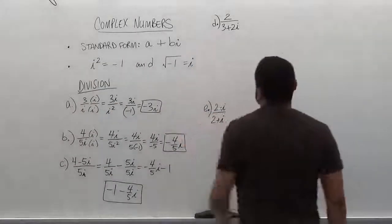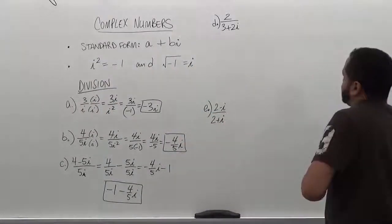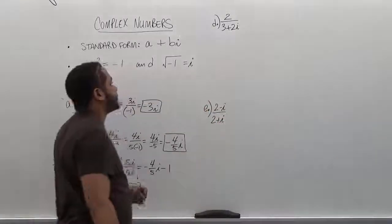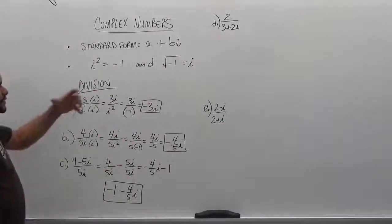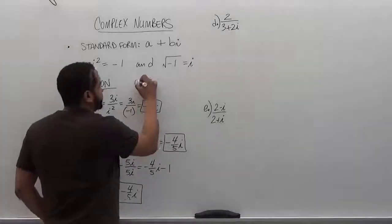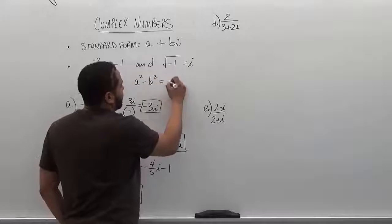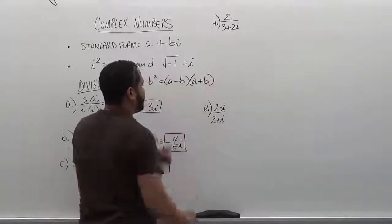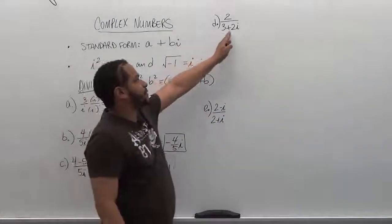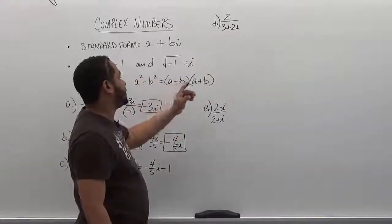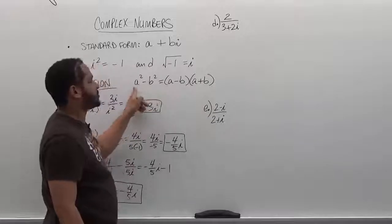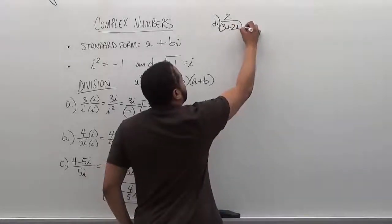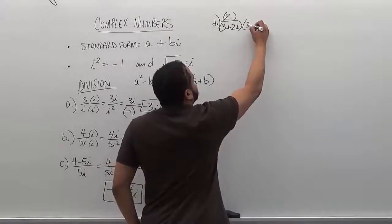Let's move on to the fourth problem: 2 divided by 3 plus 2i. To complete this rationalization, since the denominator has a binomial, we use the conjugate pair. The conjugate pair comes from the difference of two squares formula: the first term minus the second term, times the first term plus the second term. In this case we have 3 plus 2i, so we need 3 minus 2i to create the difference of two squares.